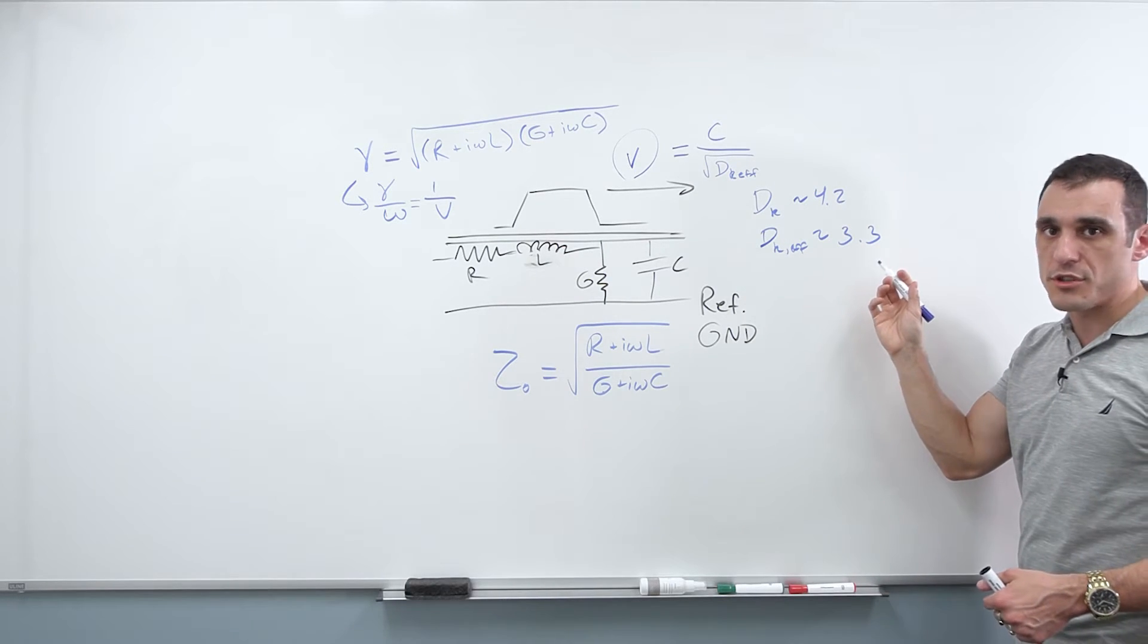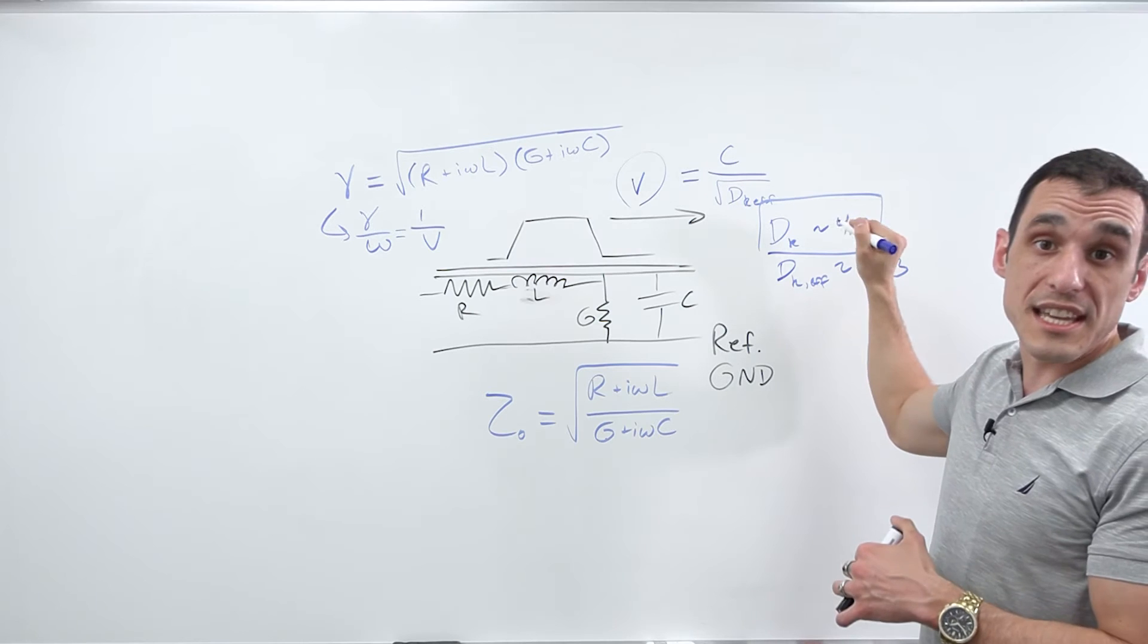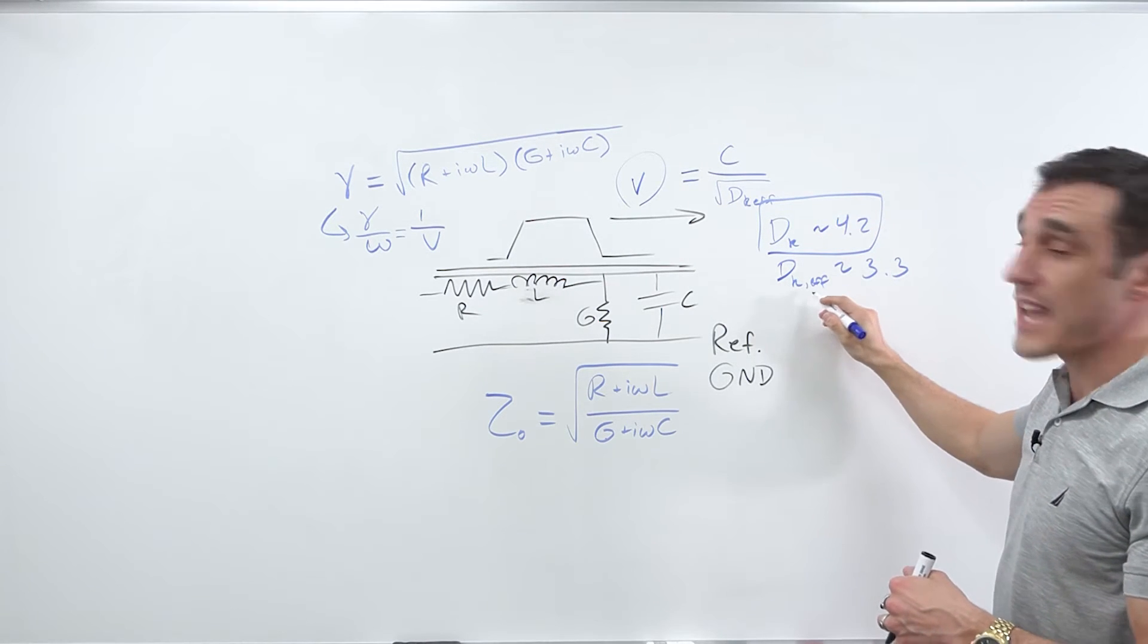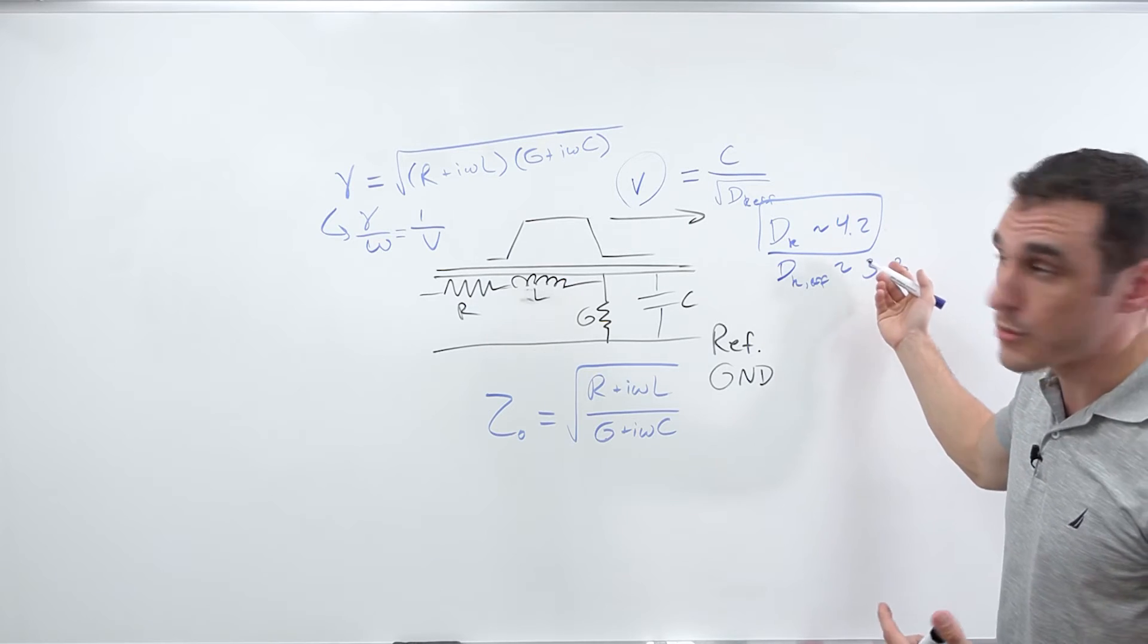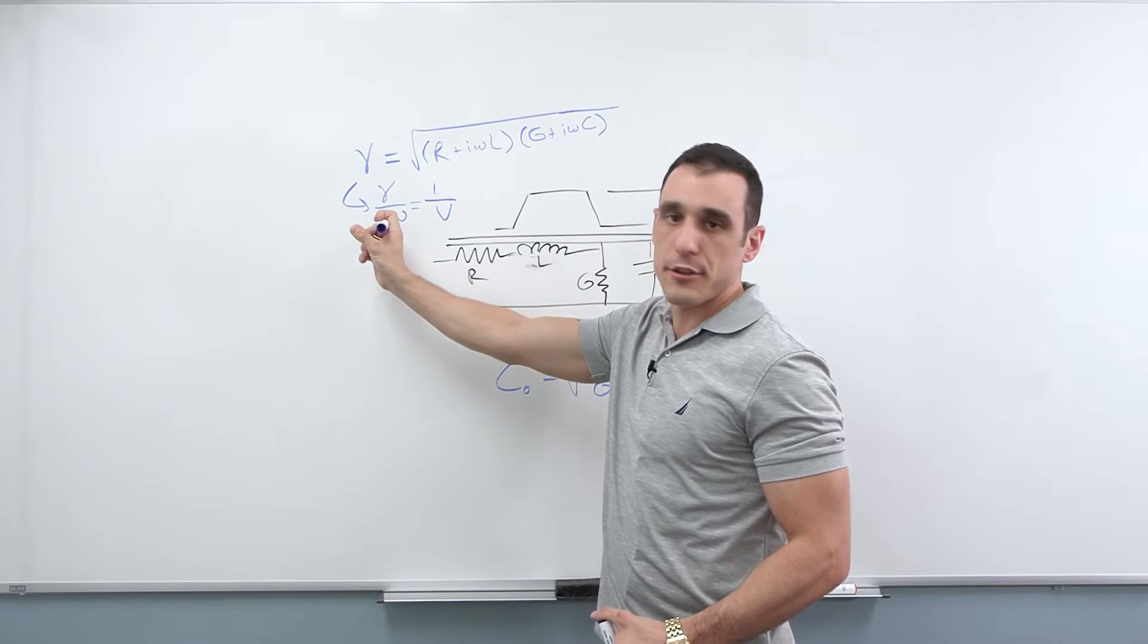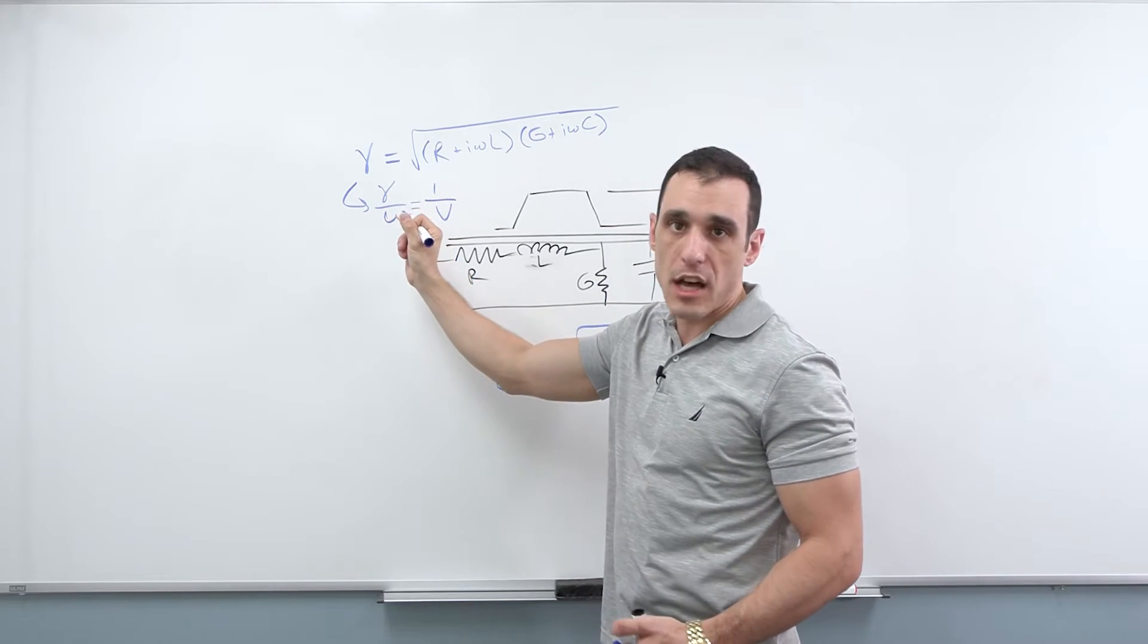There are calculator applications you can use to calculate this. If you know DK at this specific frequency that you're looking at, you can calculate DK effective at that same frequency, just based on the geometry of your line. So here, I mentioned that if we factor out Omega, we can get back to a velocity.